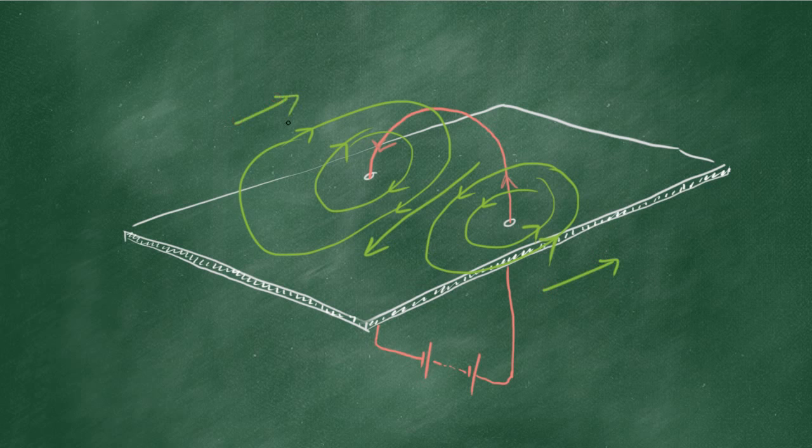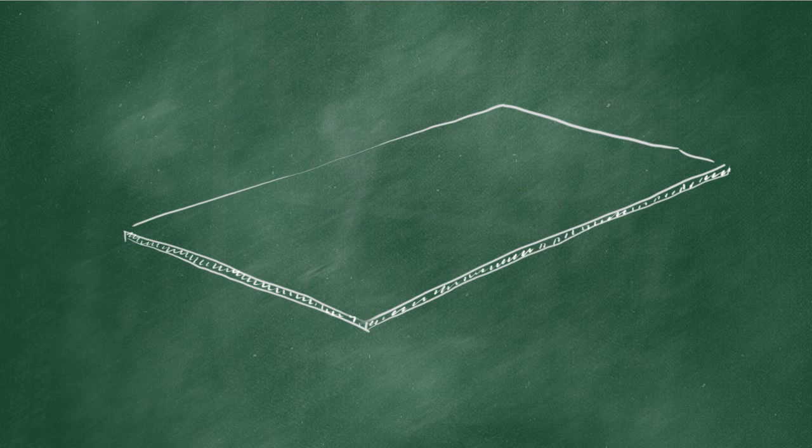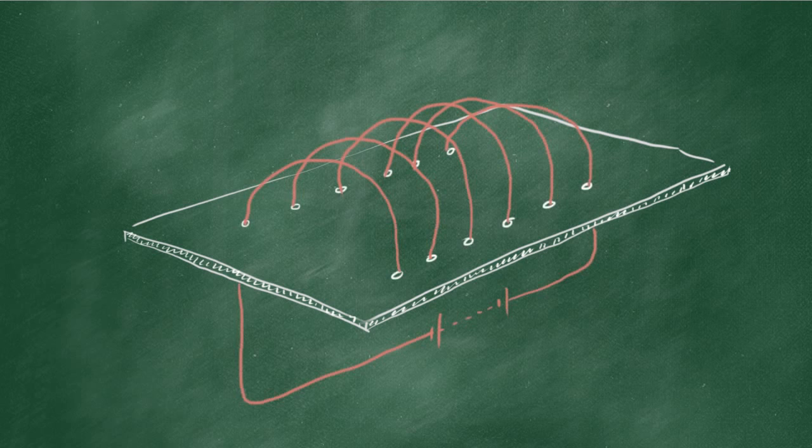We want to levitate a frog, so we're going to need a much stronger magnetic field. One way we can do that is to just increase the current. But another way we can do that is to have more coils of wire, more loops of wire.